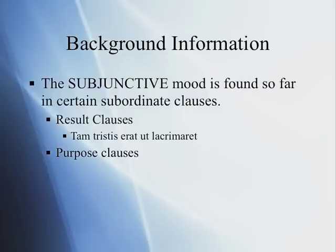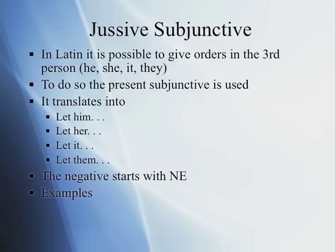He is so sad that he is crying. That's how we have seen the subjunctive. Now, surprise — the subjunctive is going to be used sometimes as the main verb. In Latin, it is possible to give orders to the third person — he, she, it, or they — and for this, you use the subjunctive. In this case, the subjunctive will be known as the jussive subjunctive. The word 'jussive' comes from the word 'jubeo' in Latin, which means to order. So it's the subjunctive used to give an order.